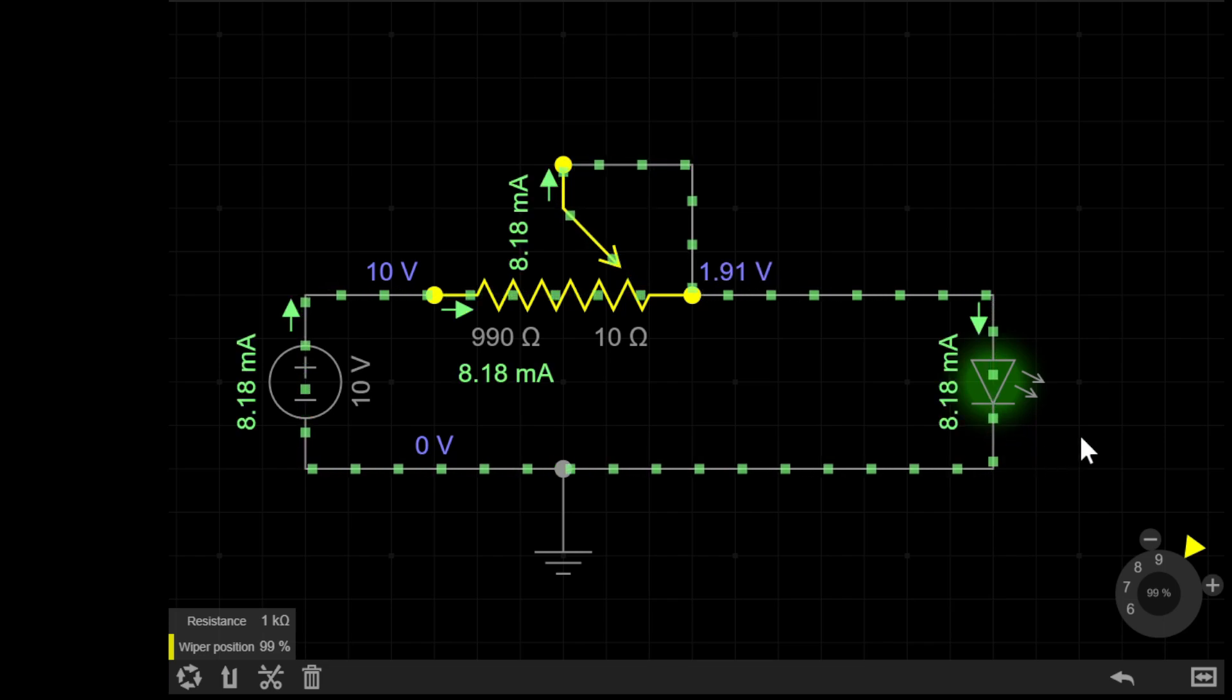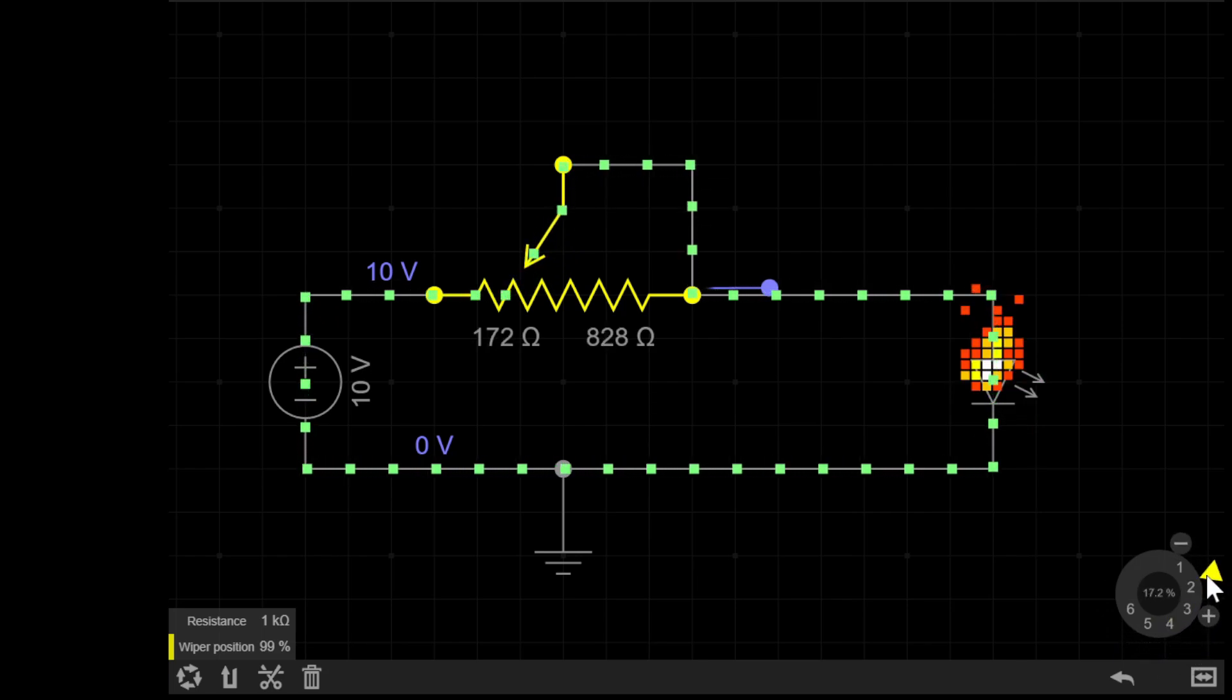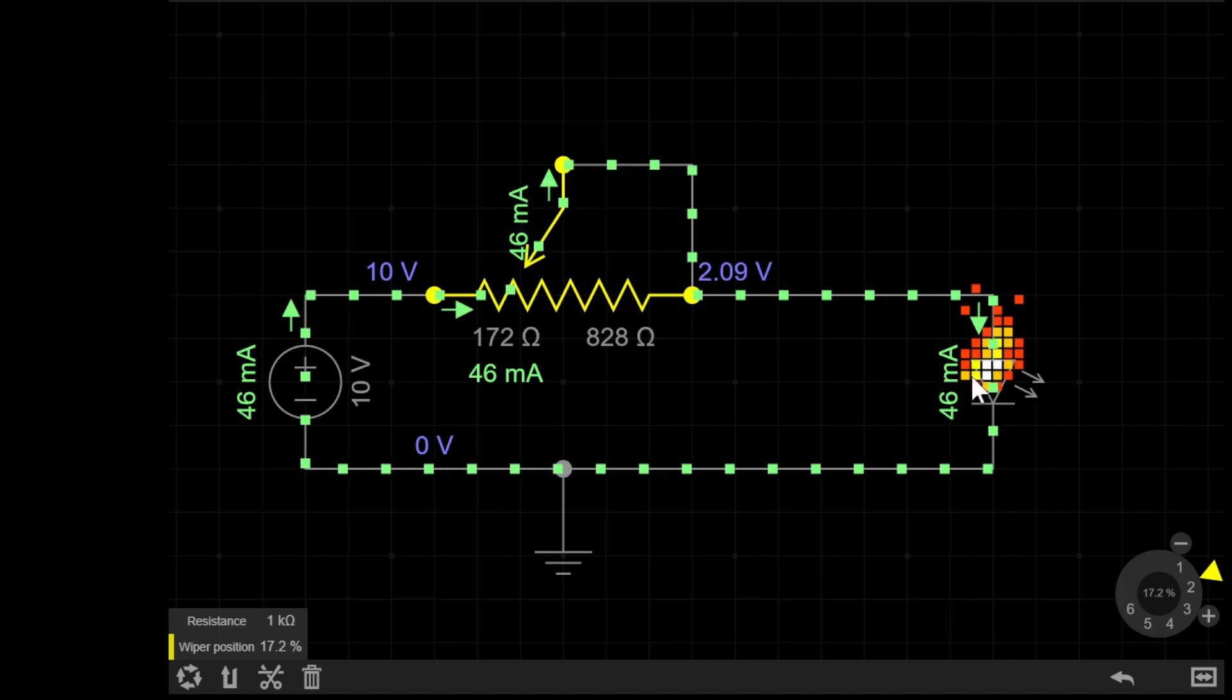And vice versa, if I decrease the resistance of the pot, the LED gets brighter and brighter, which is really useful up until a certain point where the current gets too much and the LED breaks. Let's fix that.